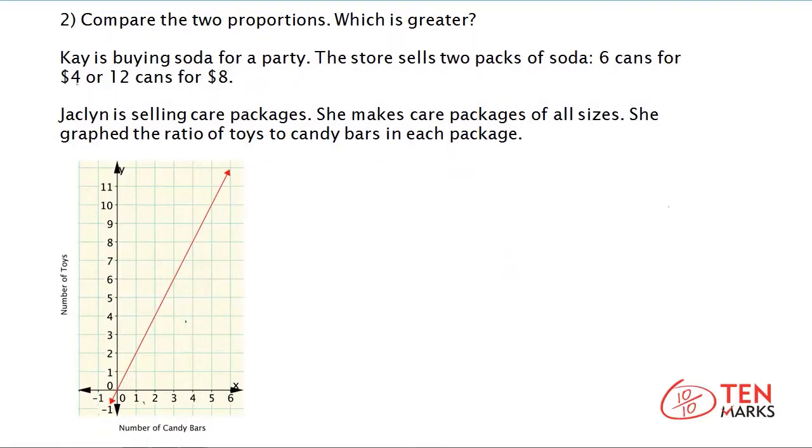So in the first scenario here, we have Kay, and she's buying soda for a party. The store sells two different packs. You can either have six cans for $4, or you can buy 12 cans for $8.